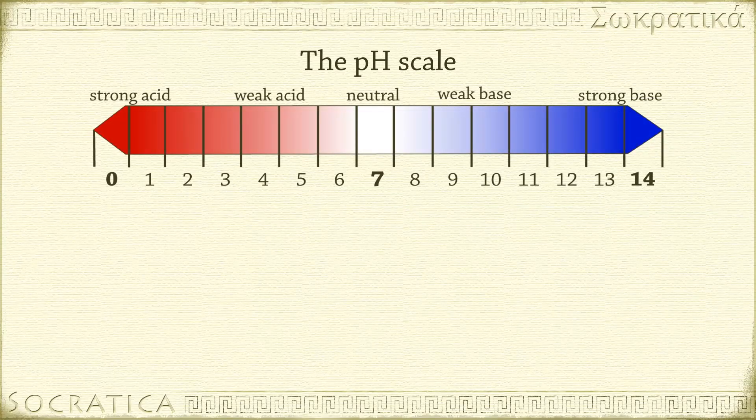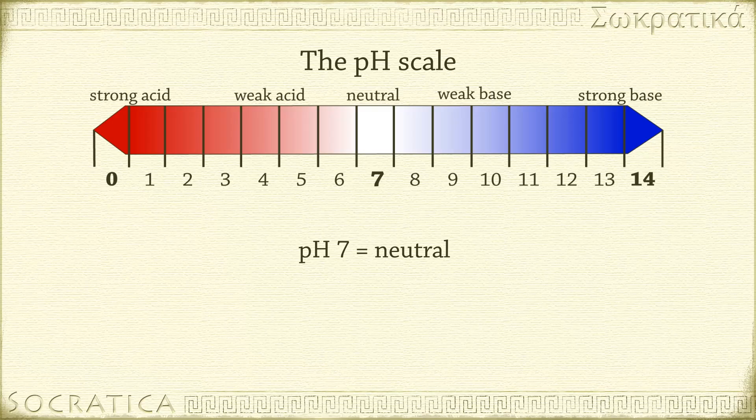All substances that have a pH of 7 are neutral. This means there is an equal concentration of H+ ions and OH- ions. If the pH is less than 7, it's an acid. That's when there are more H+ ions than OH- ions.